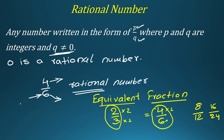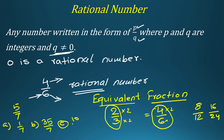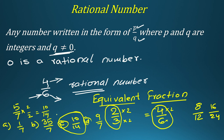A simple exam question could be: which of the following is the equivalent fraction to 5 over 7? Option A: 1 over 7. Option B: 35 over 7. Option C: 10 over 14. Option D: 9 over 7. If you multiply numerator and denominator of 5 over 7 by 2, you get 10 over 14. So the answer is Option C. You get an equivalent fraction by multiplying the same number in both numerator and denominator.